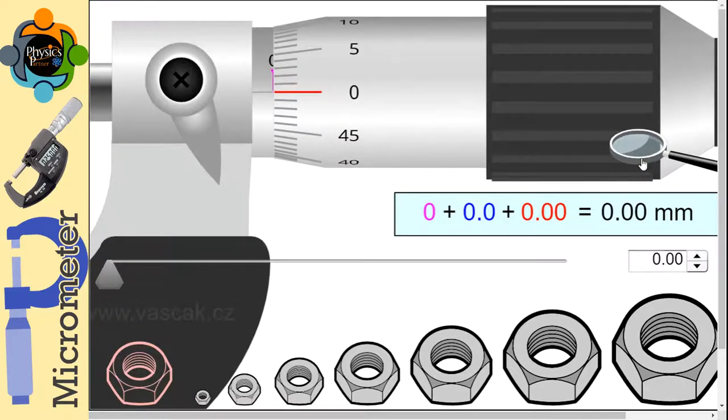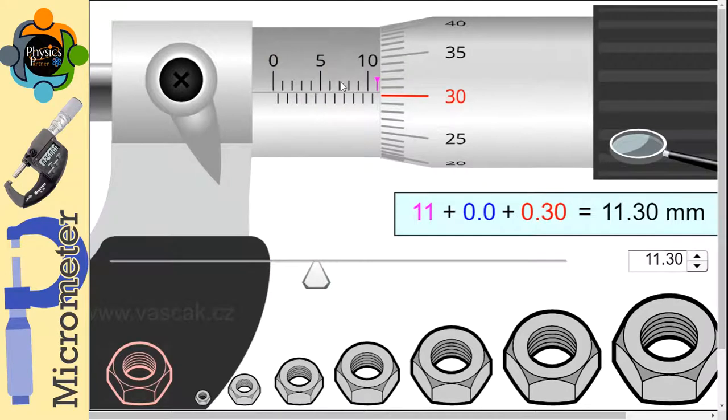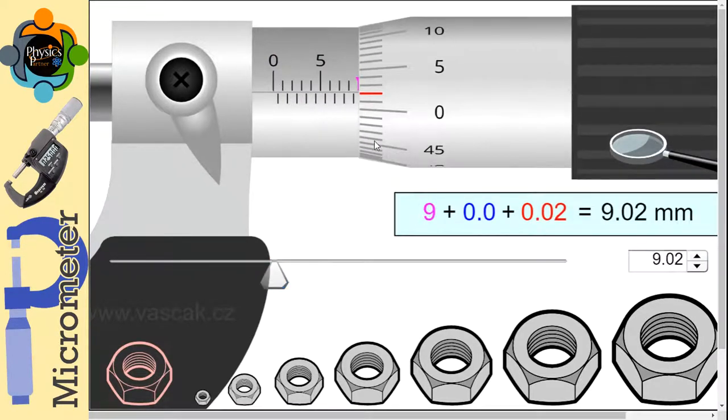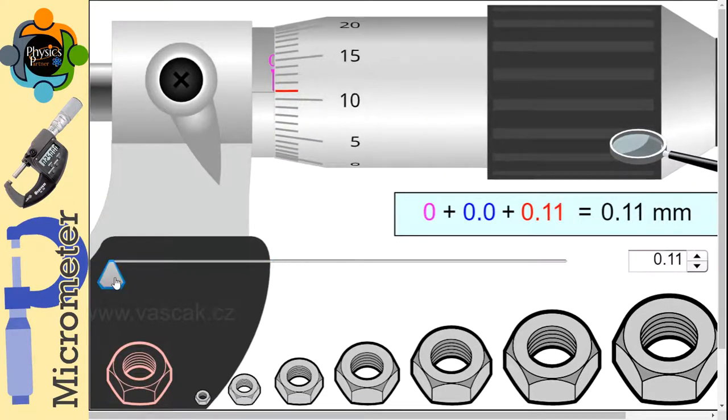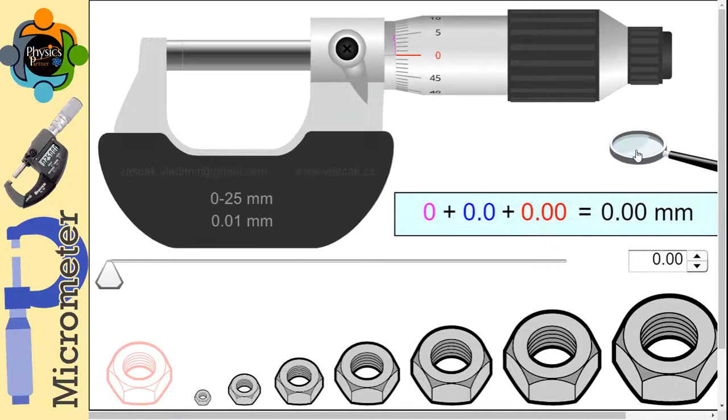The micrometer has two scales. One is called the main scale - you can see zero, five, ten. This scale is considered the main scale. Another scale is the circular scale. Right now you can see all readings are zero. There are purple, blue, and red readings.